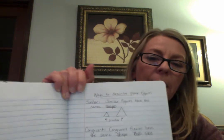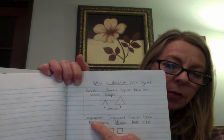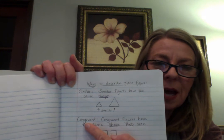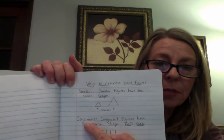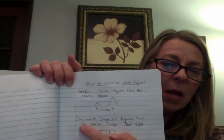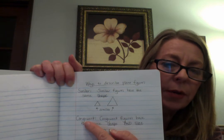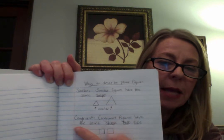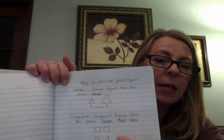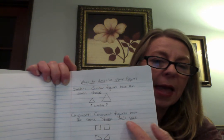The next way we can describe plain figures is the word 'congruent.' In math we have several terms that mean equal. Remember when we talked about fractions that represented the same amount even though they had different numerators — we called them equivalent. Well, we have that in geometry too with plain figures. We can have some that are congruent. Congruent figures have the same shape and size. So here's the difference: similar means same shape; congruent means same shape AND size.